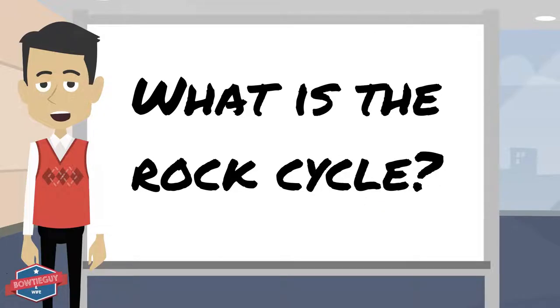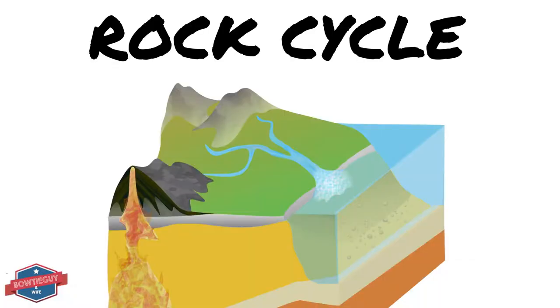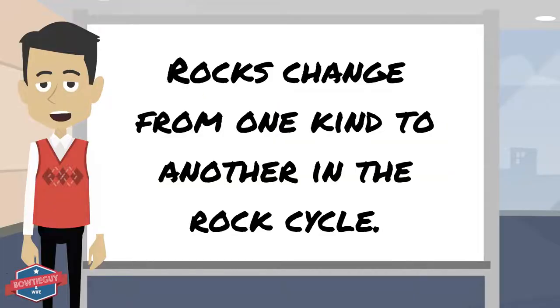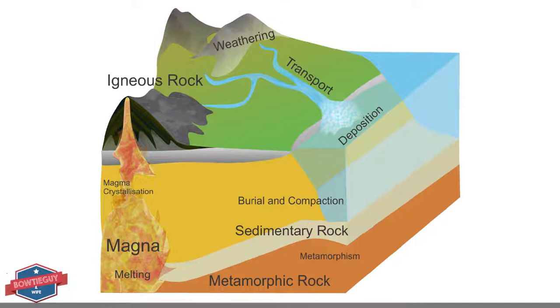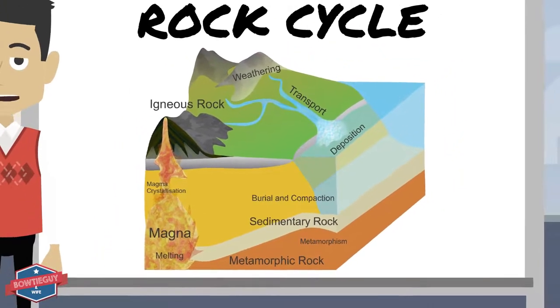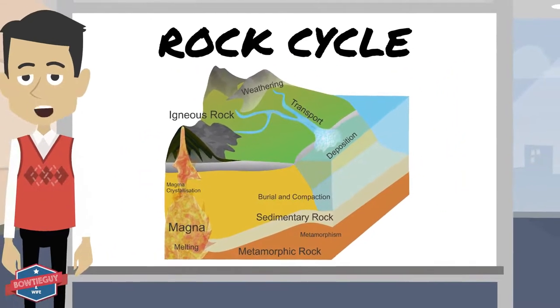What is the rock cycle? The rock cycle is a continuous process where rocks change from one kind to another. This process repeats over and over again. If you take a look at this graphic, you can see the undertaking that is the rock cycle.